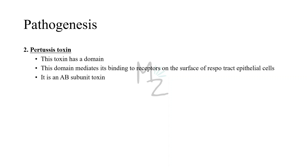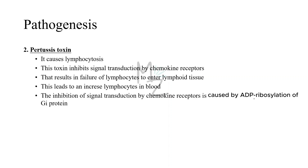Pertussis toxin has a domain that mediates its binding to receptors on the surface of respiratory tract epithelial cells. It is an AB subunit toxin. Pertussis toxin also causes a striking lymphocytosis in the blood of patients with pertussis. The toxin inhibits signal transduction by chemokine receptors, resulting in a failure of lymphocytes to enter lymphoid tissue such as the spleen and lymph nodes. Because lymphocytes do not enter lymphoid tissue, their number in the blood increases, leading to lymphocytosis. This inhibition is also caused by ADP ribosylation of Gi protein.